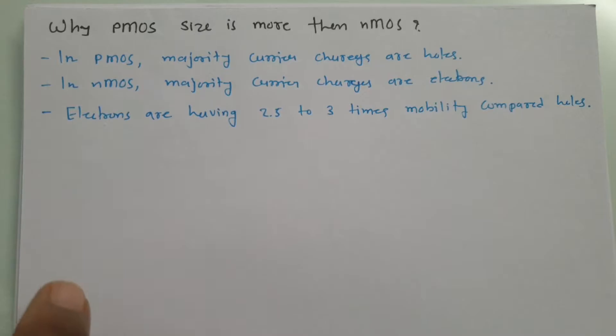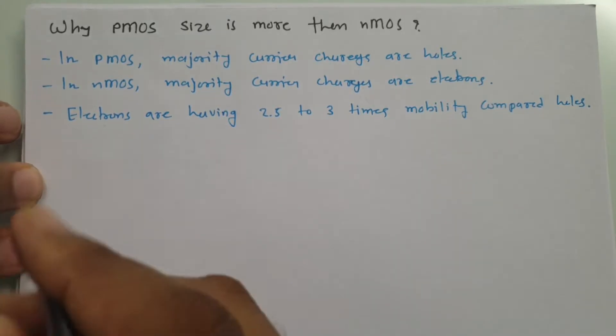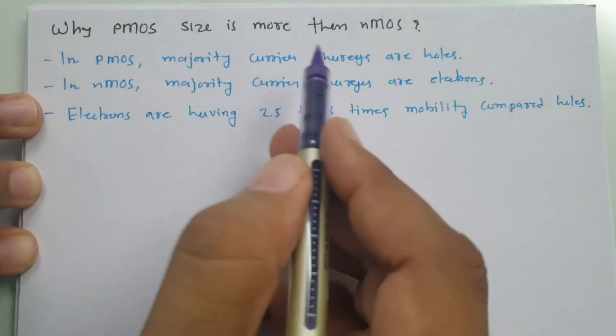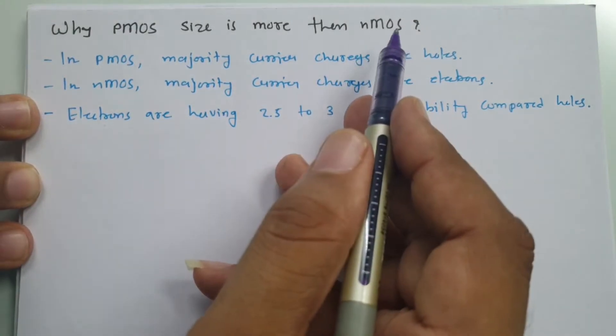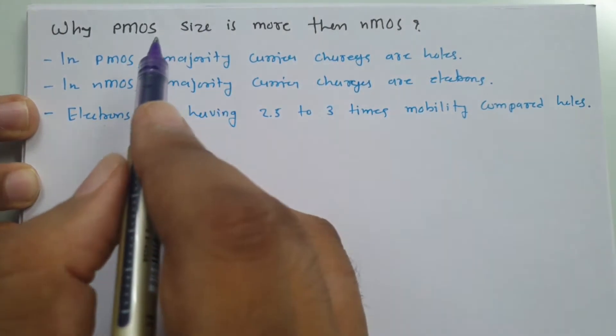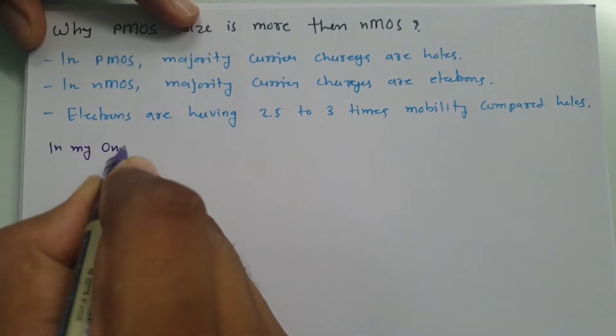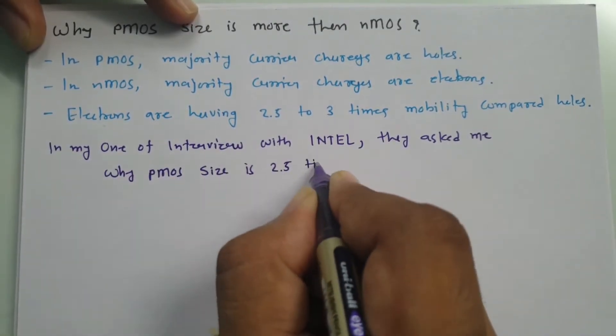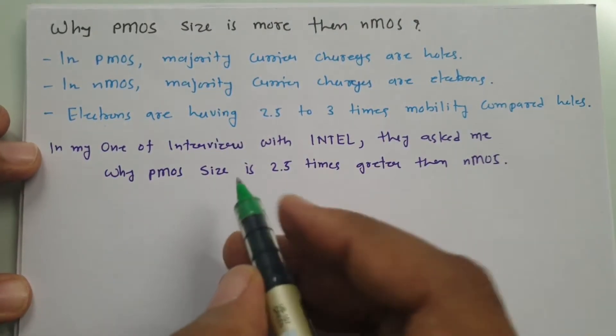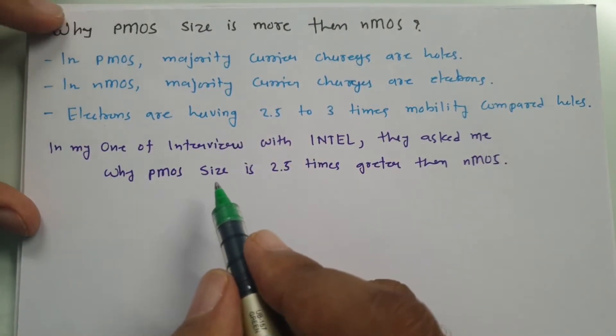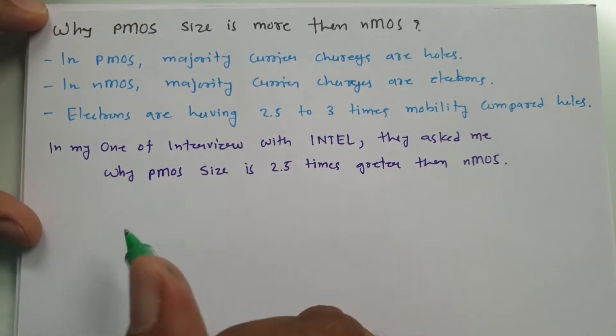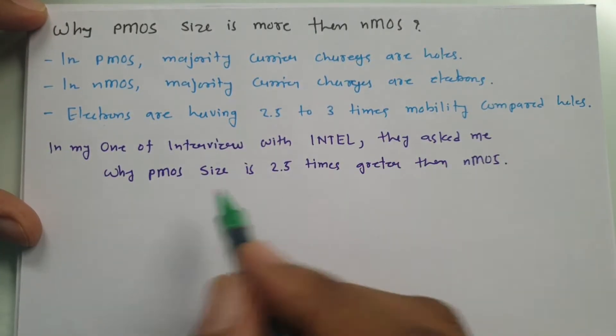Why I am discussing this? The reason is, in one of my interview with Intel, they have asked me PMOS size is 2.5 times greater than NMOS. And why that is happening like this? So, let me write this question first. That was the question. And now I would like to explain you that by CMOS inverter.